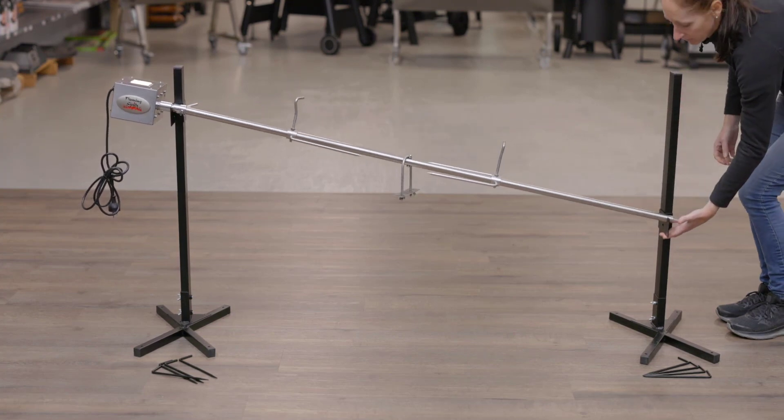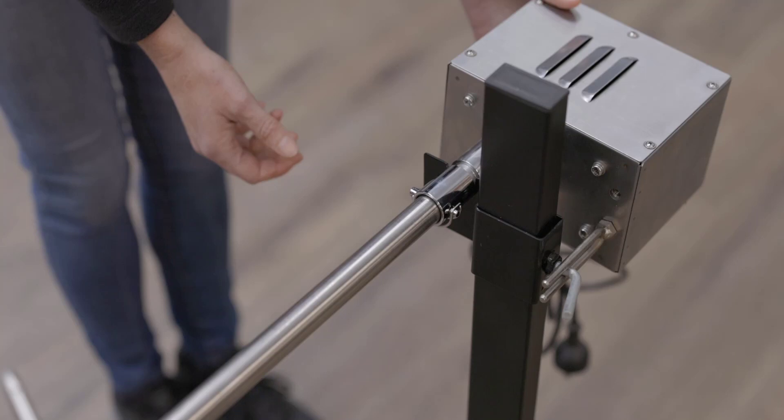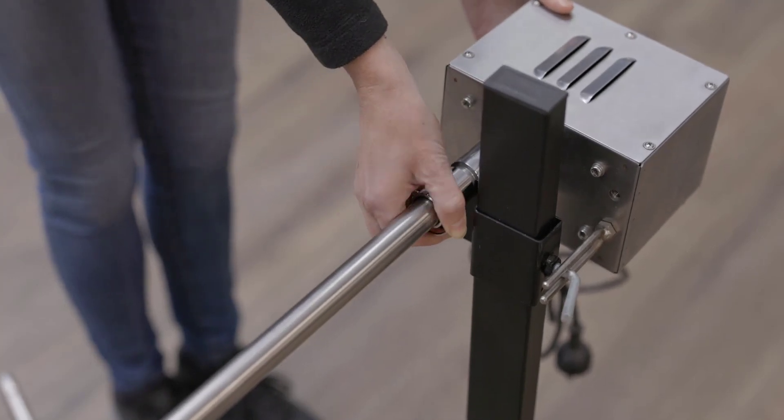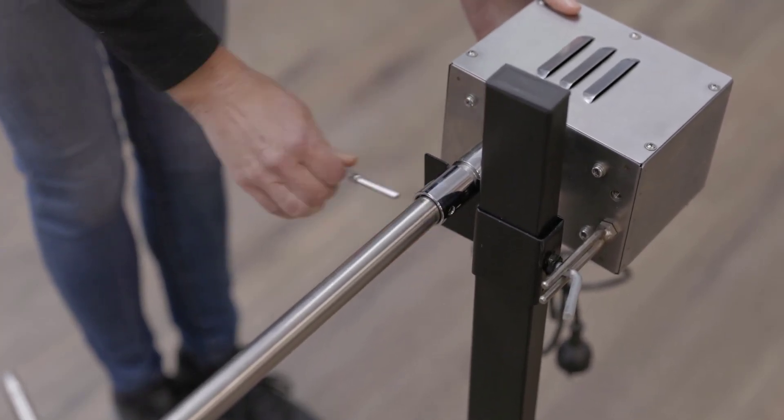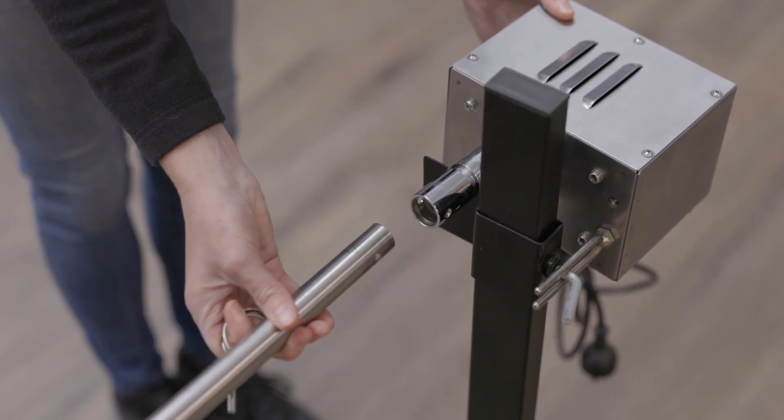A quick-release pin skewer attaches to the motor and is easily removable in a second when you need to quickly get your meat away from the fire.